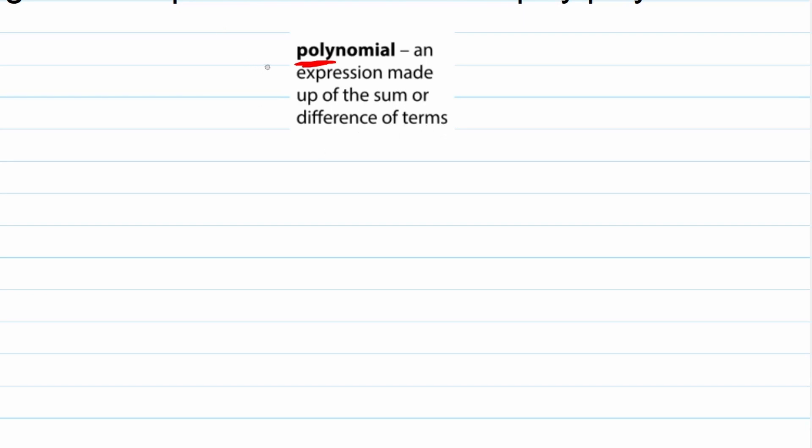Many. We've got specific terms regarding polynomials and we call those monomials. Now the word mono means one.